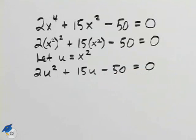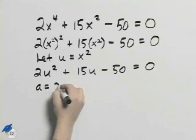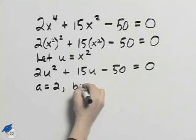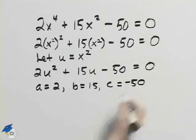Now we have a quadratic equation that we can solve. I'll use the quadratic formula to do so. Here we have a is 2, b is 15, and c is negative 50.